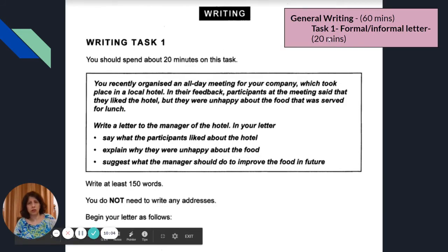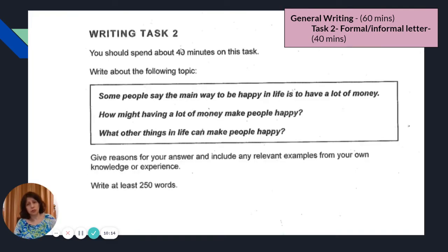For general writing, the total time is again 60 minutes. This is task one: formal or informal letter which you have to complete within 20 minutes. Task two is again an essay just like we had for academic task. The time to complete is 40 minutes and you have to write 250 words. This is a two-part question, another question type.